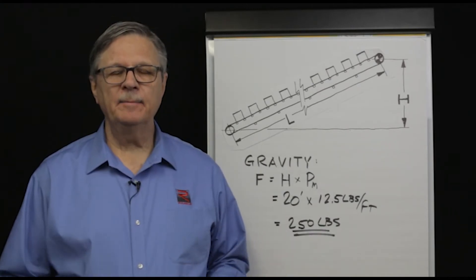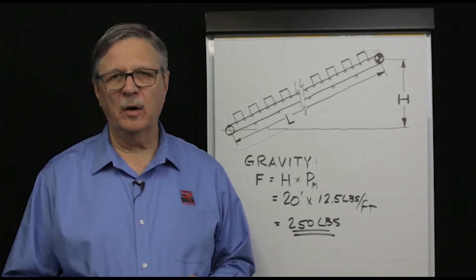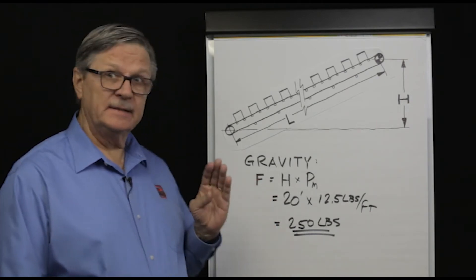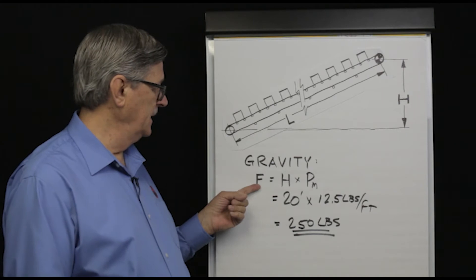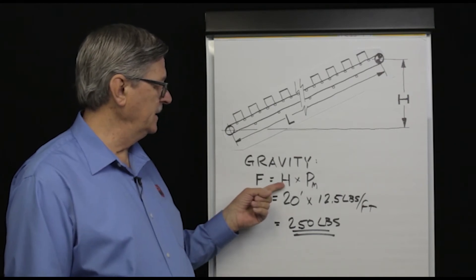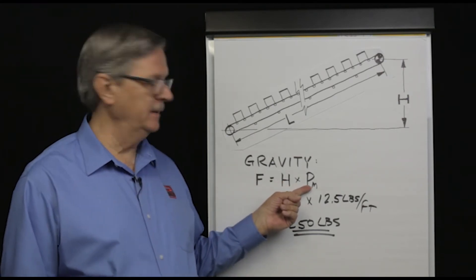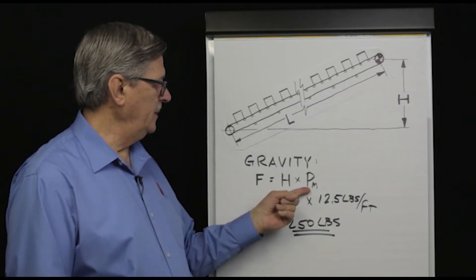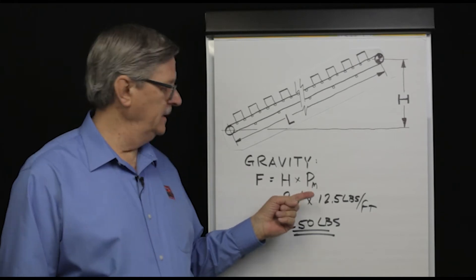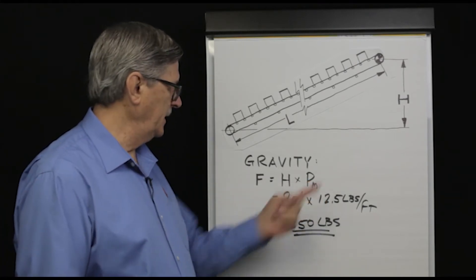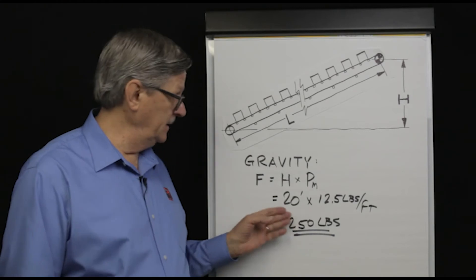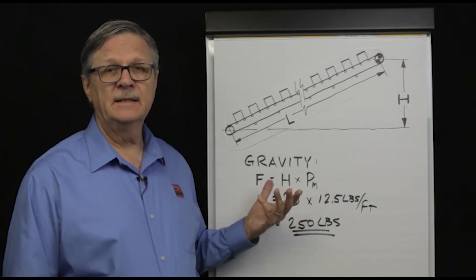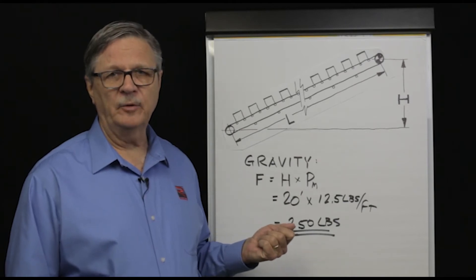Now let's calculate the amount of belt pull required to overcome gravity. The equation is: force equals change in elevation H times the weight per foot of the product to be handled. H equals 20 feet, and the weight per foot of the product is 12.5 pounds per foot. The product of those two numbers is 250 pounds — that is the component of belt pull required to overcome gravity.